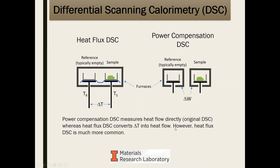The power compensation method measures heat flow directly and was the original DSC method. The heat flux DSC is much more common in laboratories today. Power compensation tends to be better for high heating rate experiments — above about 100 degrees per minute, you tend to be limited to power compensation. Heat flux DSC, being based on the older DTA method, actually handles higher temperatures overall. Both methods can obtain essentially the same data with appropriate calibrations. With advances in technology, those differences are getting smaller.